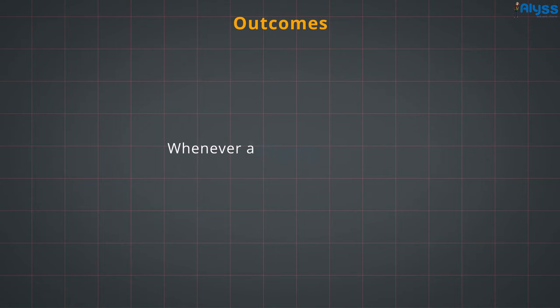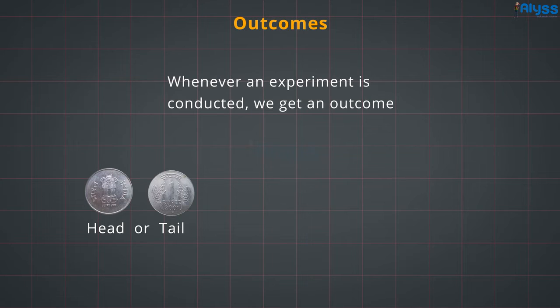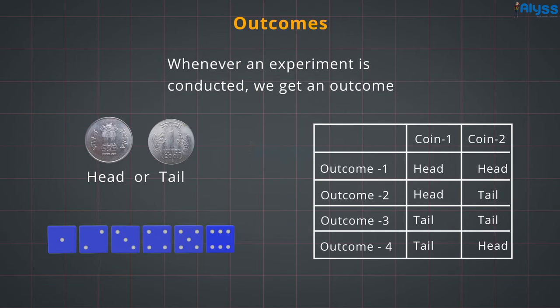Outcomes. Whenever an experiment is conducted, we get an outcome. Tossing a coin can give an outcome as head or tail. Rolling a dice can give an outcome as 1, 2, 3, 4, 5, or 6. Similarly, tossing two coins together can give us outcomes as shown on the screen.